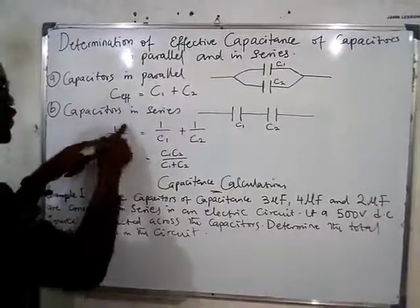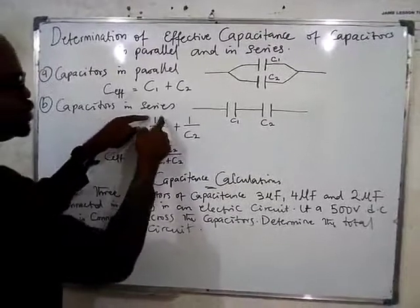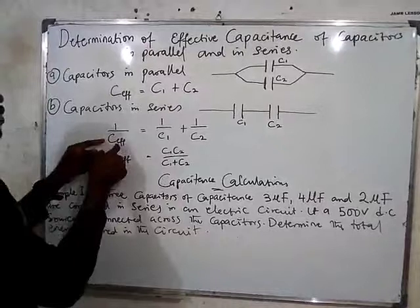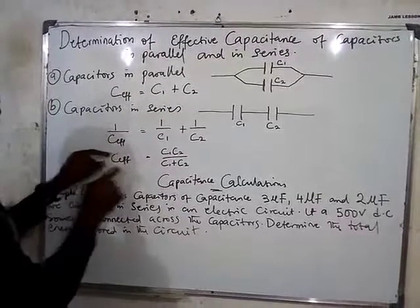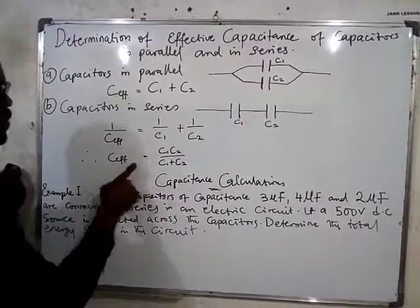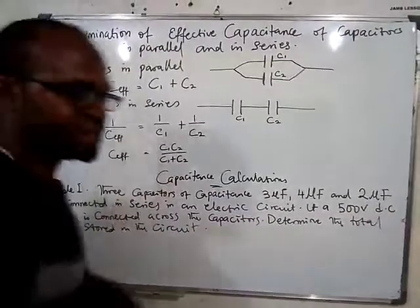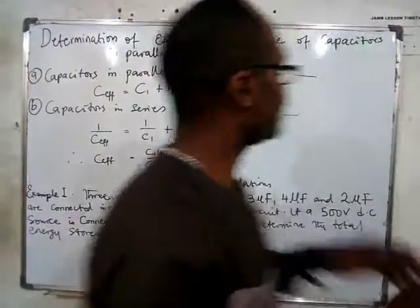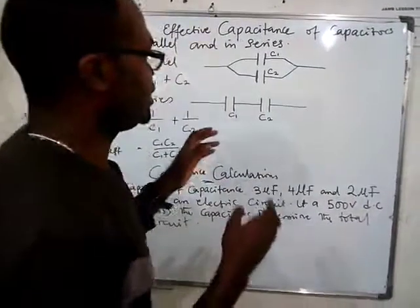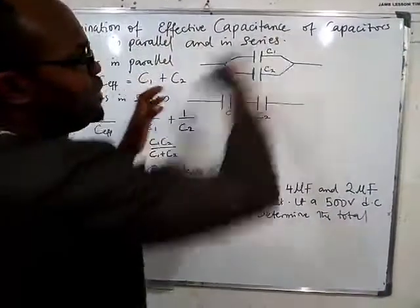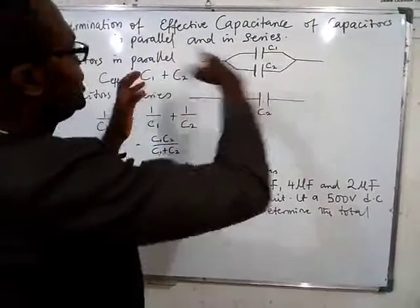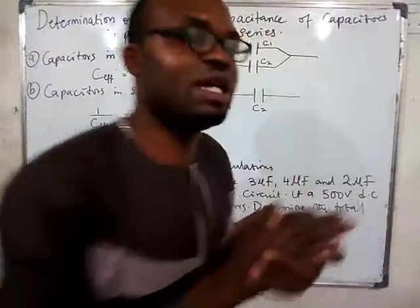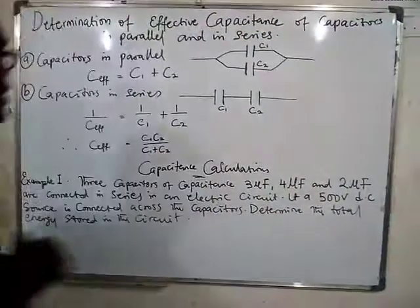When we have a series connection, 1 over the effective capacitance equals 1 over C1 plus 1 over C2, making effective capacitance equal to C1·C2 all over C1 plus C2. So capacitance does the reverse — the calculation for effective capacitance in series and parallel is the reverse of what we had for resistors.